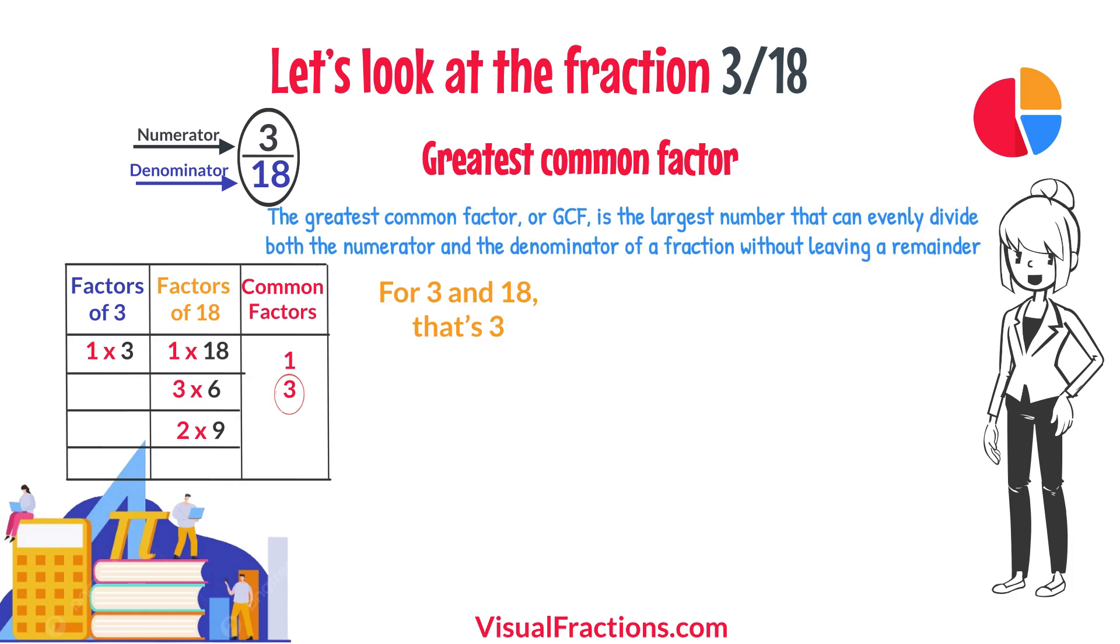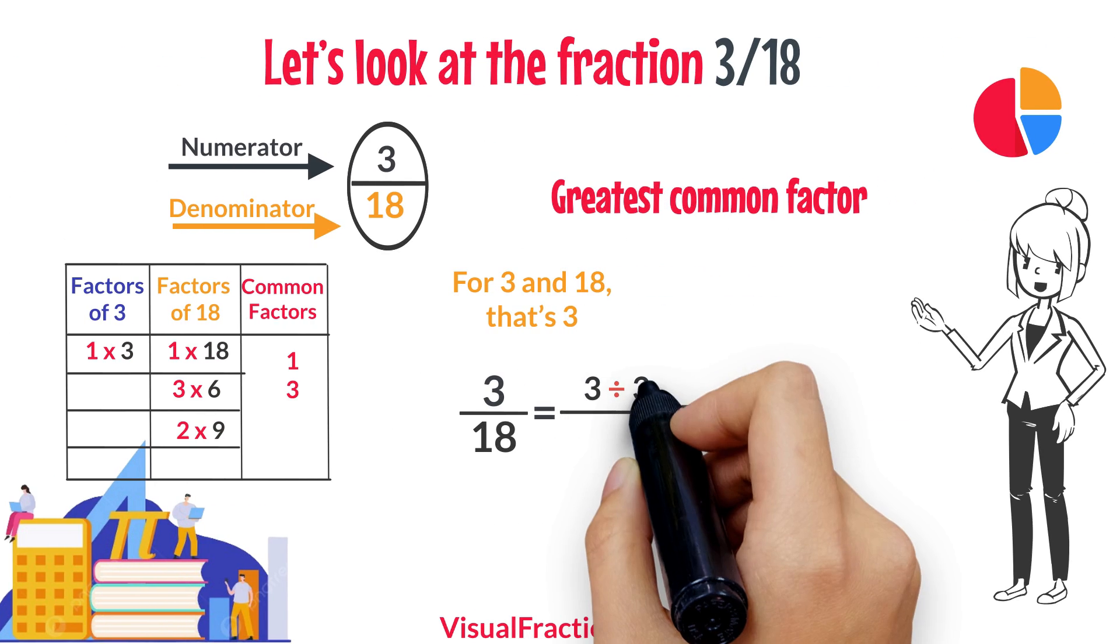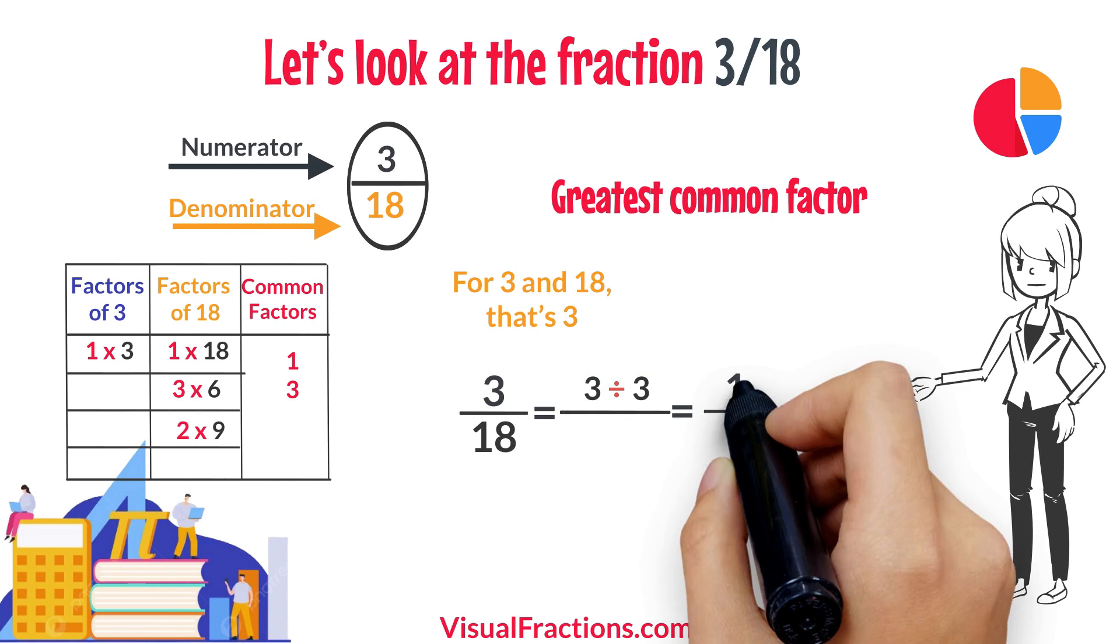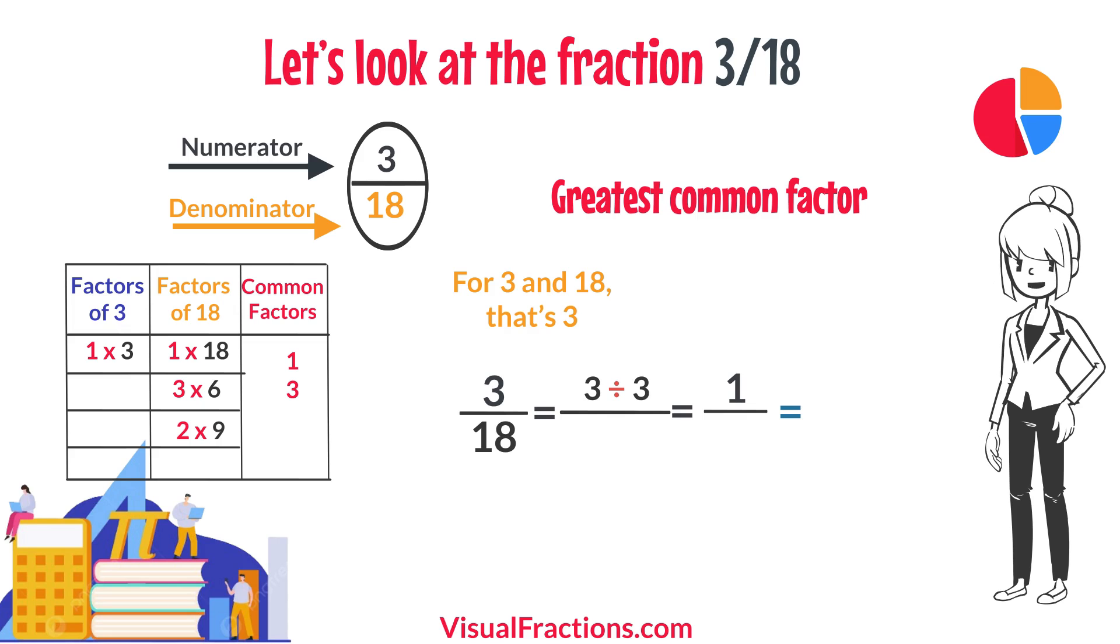For 3 and 18, that's 3. We start by dividing 3 by 3, which gives us 1. Then we divide 18 by 3, which results in 6.